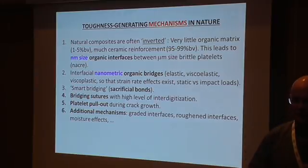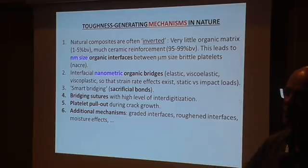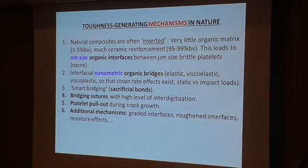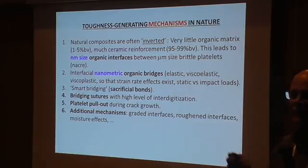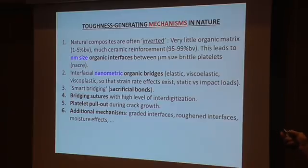There are two things to talk about: the mechanisms that you see in nature, and the motifs. The composites you find in nature are often the reverse of what we usually create. We usually create polymer-based composite materials with roughly 50% organic and 50% ceramic or brittle material. Nature doesn't do that. Nature takes 99% ceramic material, with a very tiny amount of organic protein material — something a human engineer would not even consider, but that is exactly what nature is doing.